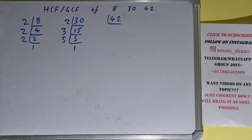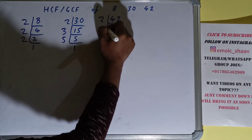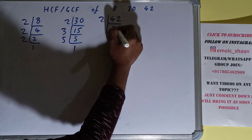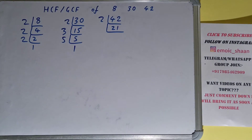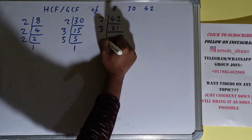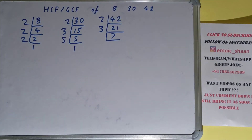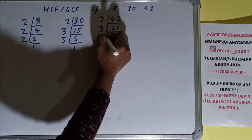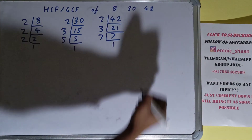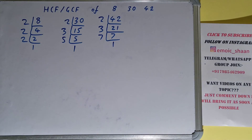Now let's come to the number 42. Is the number 42 divisible by 2? Yes it is, we'll get 21. Is the number 21 divisible by 2? The answer is no, so we'll go to the next lowest prime number, that is 3. Is the number 21 divisible by 3? Yes it is, we'll get 7. Is 7 divisible by 3? The answer is no, because 7 is a prime number, so it is only divisible by itself.